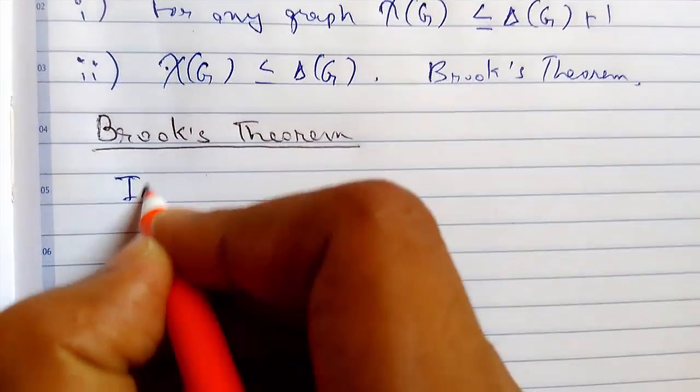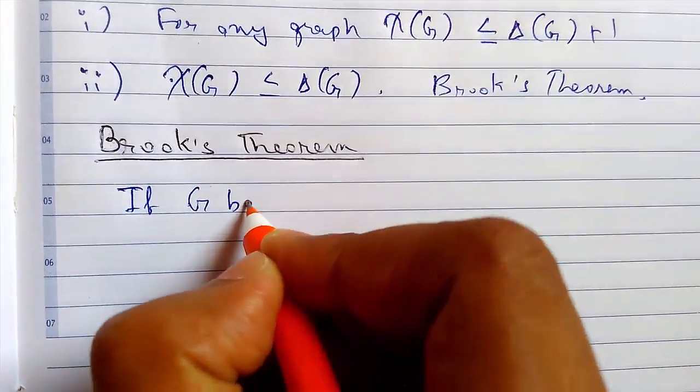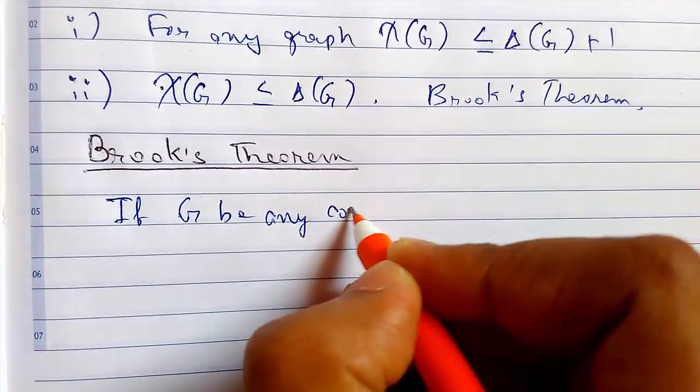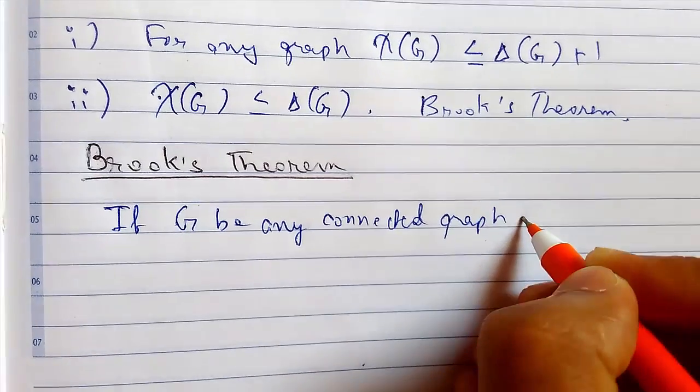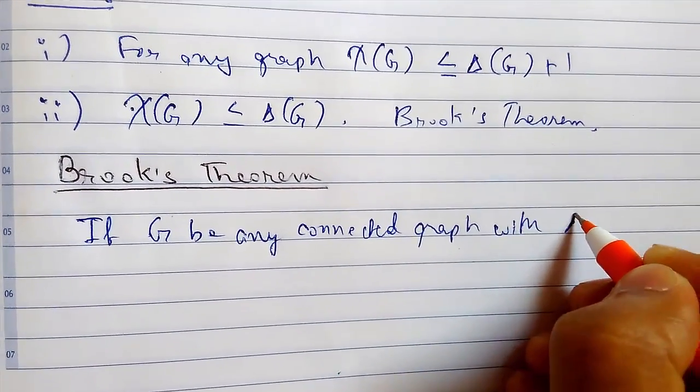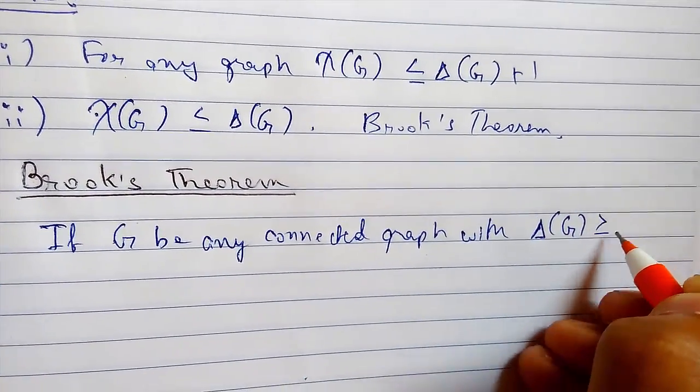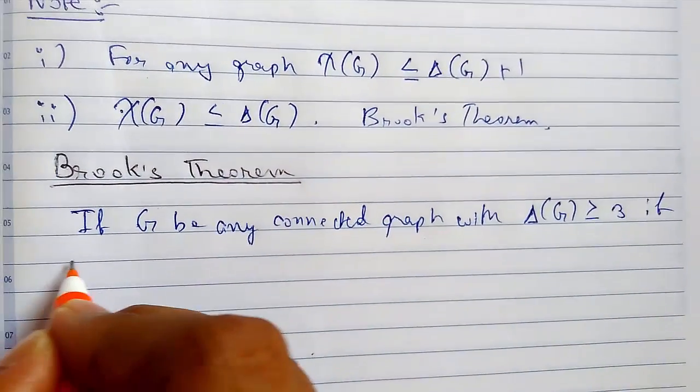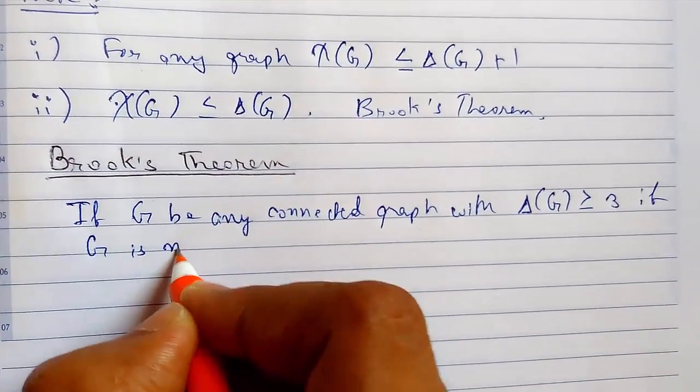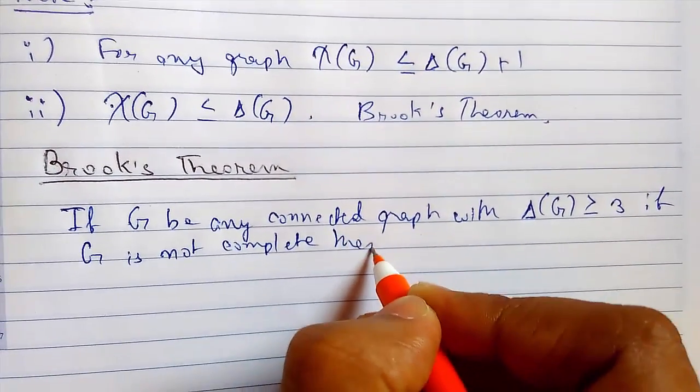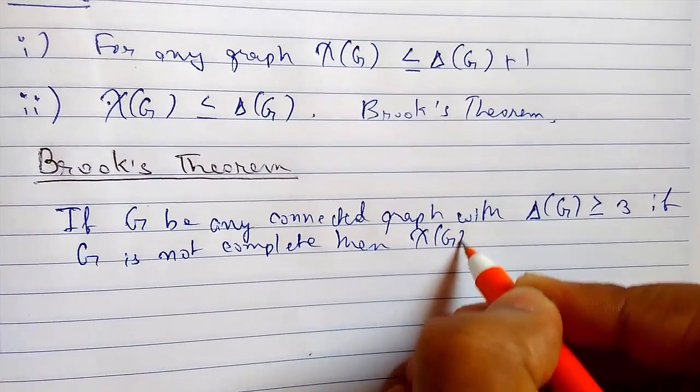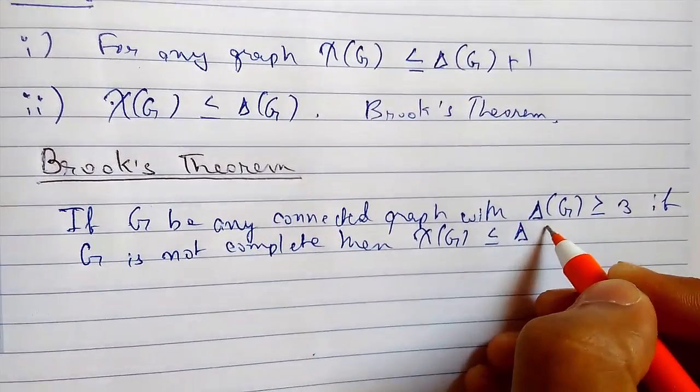If G be any connected graph with Δ(G) ≥ 3, if G is not complete then χ(G) ≤ Δ(G).